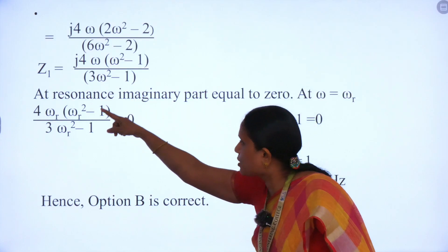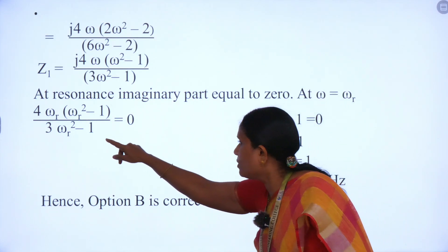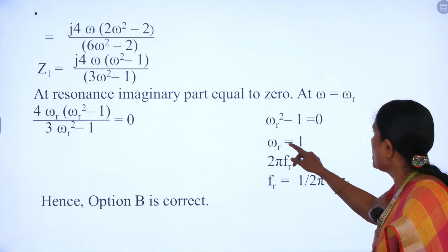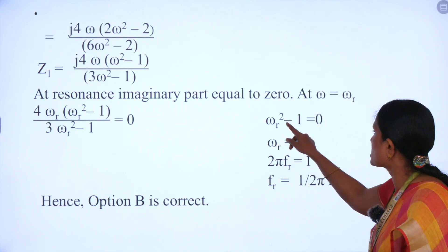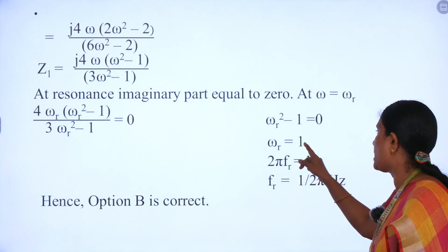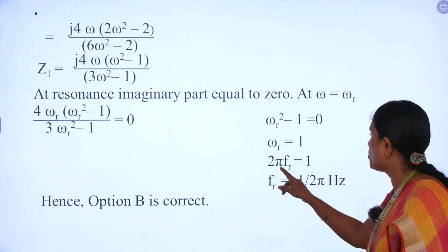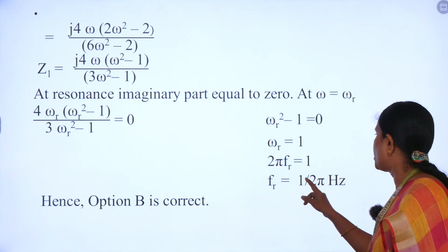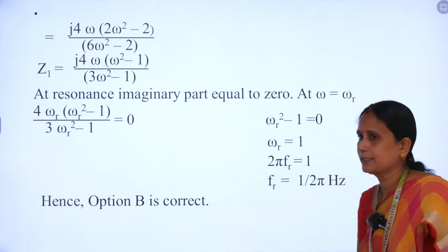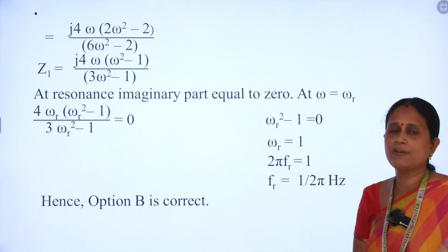Equating the imaginary part to 0, the numerator factor gives ωR² − 1 = 0, therefore ωR = 1. Replacing ωR = 2πFR gives FR = 1/(2π). So option B is correct: the resonant frequency is 1/(2π) Hz.